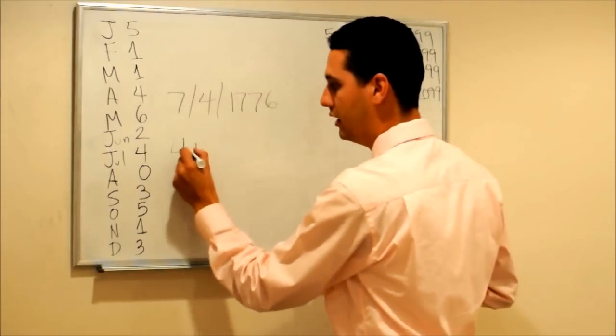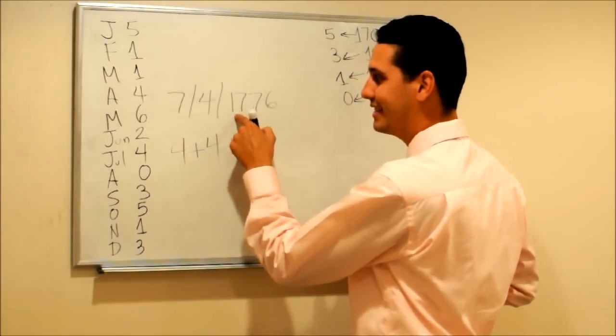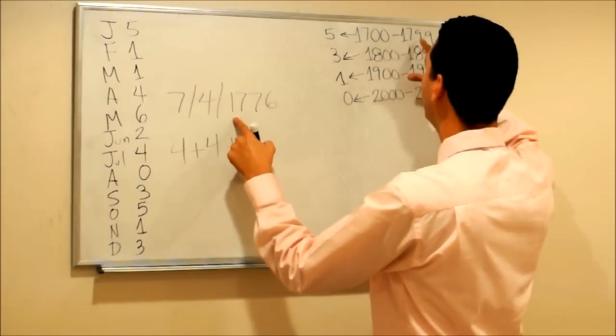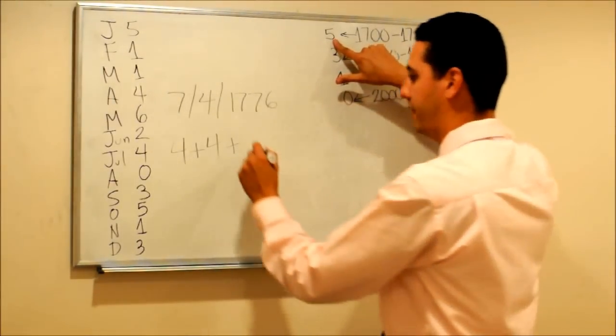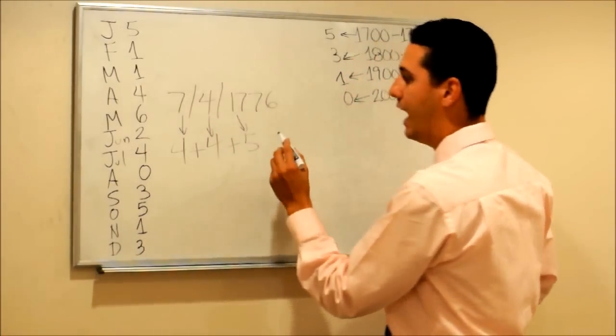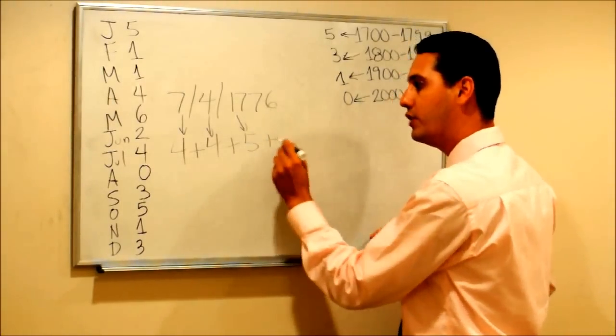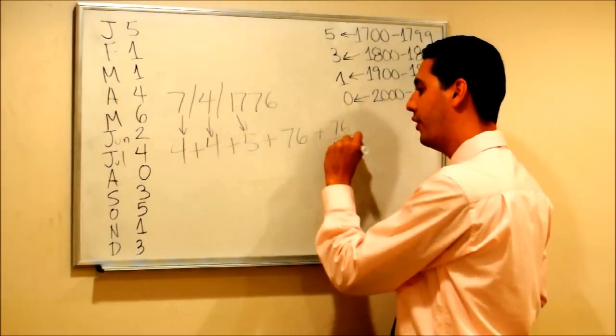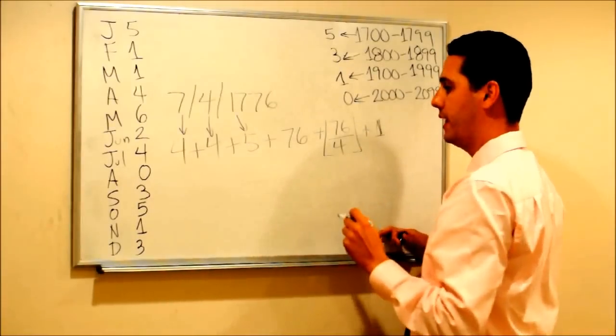We're going to start adding all these numbers. Now the 17, which means we are talking about a date of the 18th century, so it's a date between 1700 and 1799. We need to add 5, so this 5 is coming from this 17. Now the year, and this is the most complicated part.